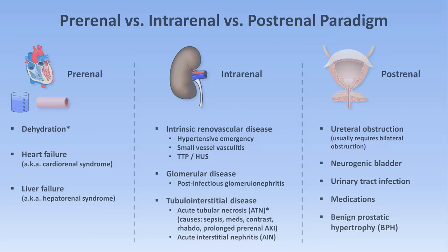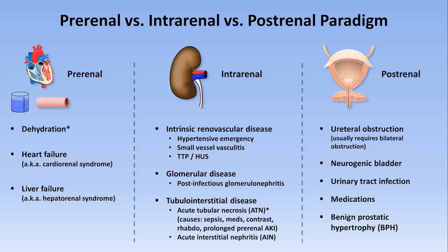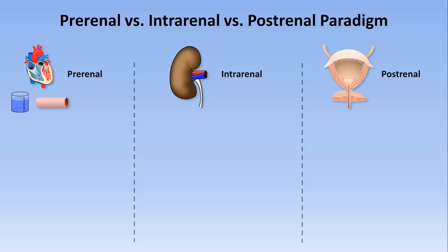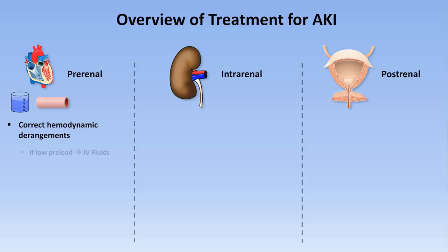This slide looks familiar from the first video in the series, in which the etiologies of AKI are listed within the pre-renal, intra-renal, post-renal framework. I'm going to use this same framework to discuss approaches to treatment. First are the pre-renal etiologies, which were etiologies of AKI related to changes in hemodynamics. As a general principle, treating them requires correcting hemodynamic derangements.